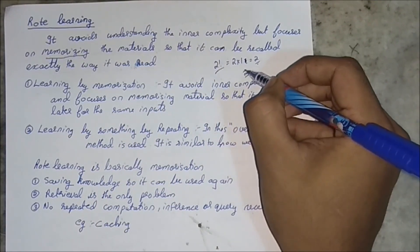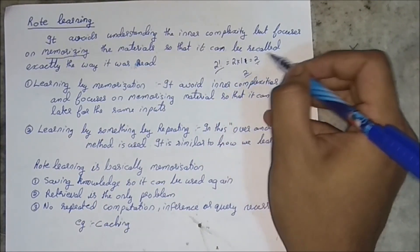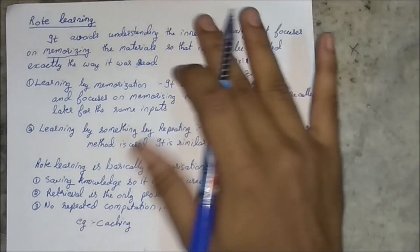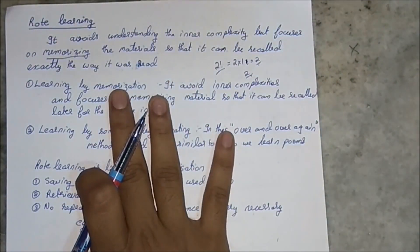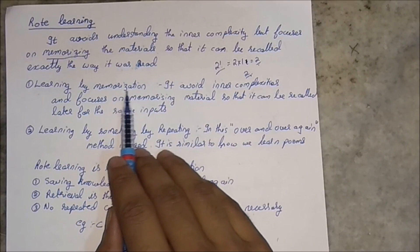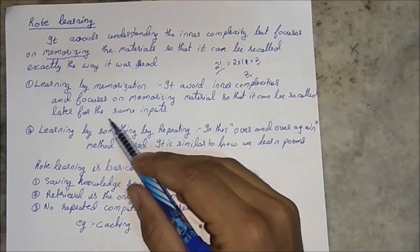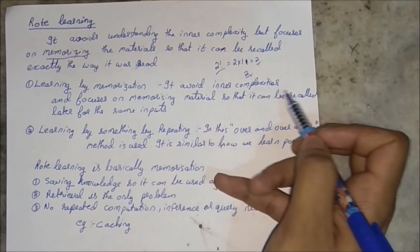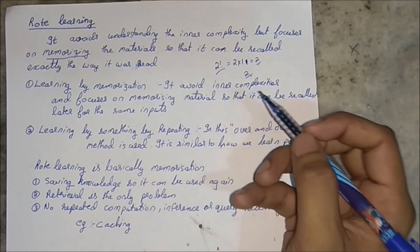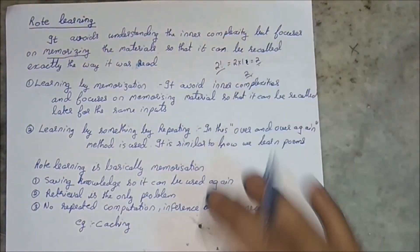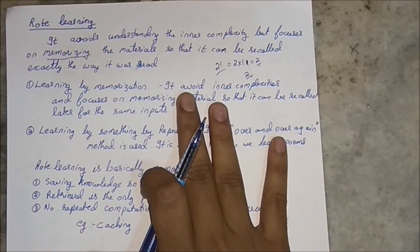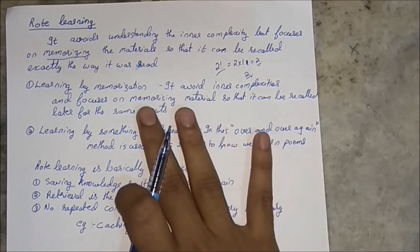When it is called next time, it is shown exactly how it was read. So this is rote learning — a very simple method of learning by memorization. It avoids inner complexity and focuses on memorizing material so that it can be recalled later for the same input, like we have seen for two factorial.